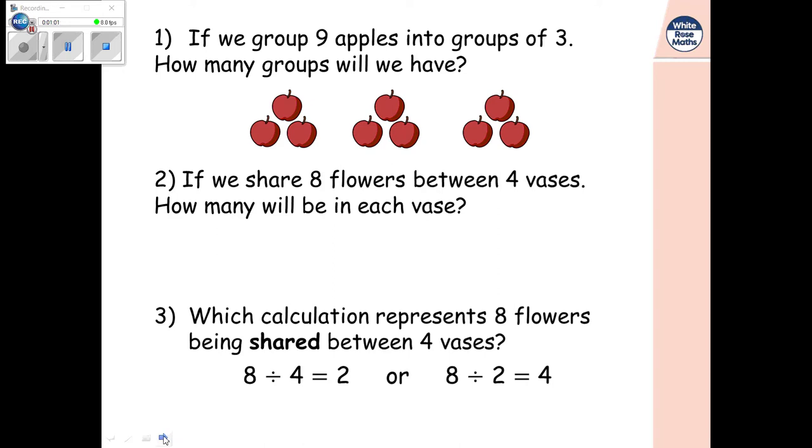So let's have a little look. So I'm going to be counting to eight and making sure I'm sharing them between four vases. So one, two, three, four. And we're going to start all the way again. Five, six, seven, eight. So I've shared out eight between one, two, three, four vases. And how many will be in each vase? Well there's two, two, two and two. So they're equal and there will be two in each vase.